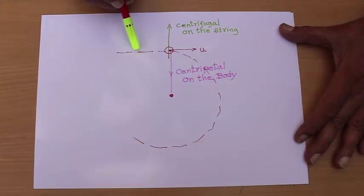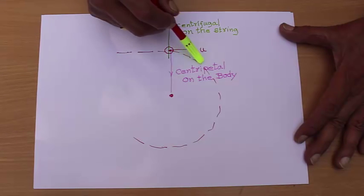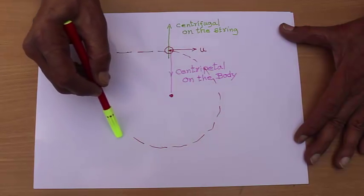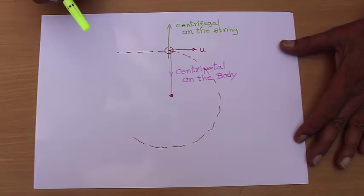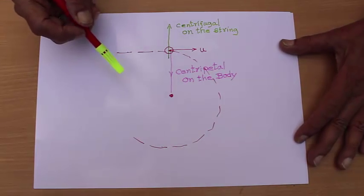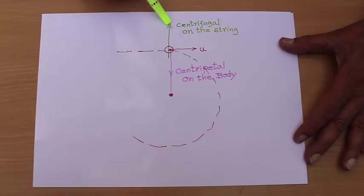If the body is moving in this direction and it starts moving like this in a circle, we say the centrifugal force acts away from the center. So let's say this is the centrifugal force.